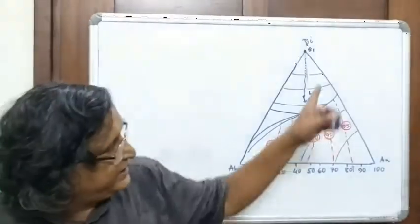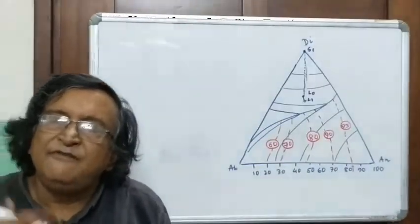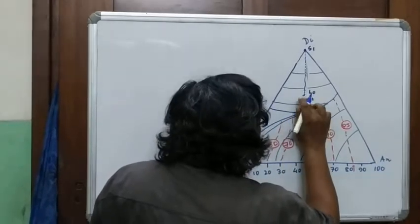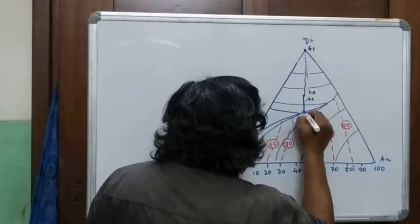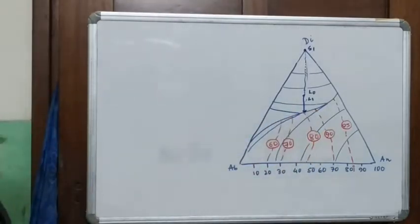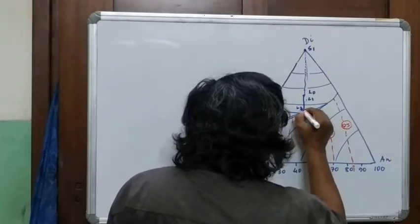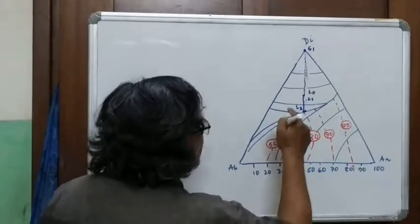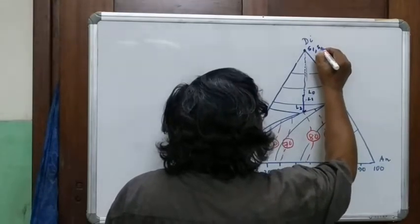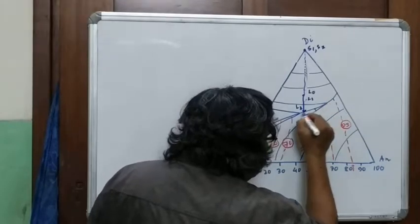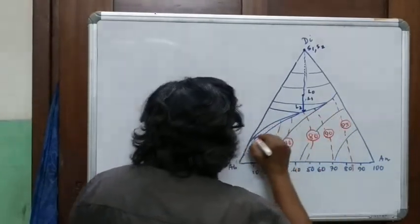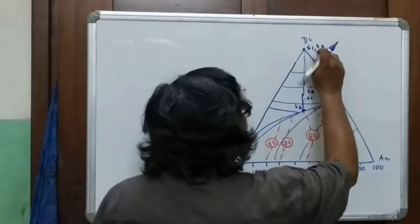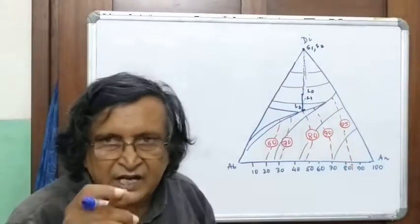L0 L1 divided by S1 L1 should be the fraction of crystallization; one minus that value will be the fraction of melt remaining. As we do this, at one point we will reach L2. What is the solid composition? It is still S2 if it has not reached the boundary curve. But if it has reached the boundary curve, then your solid S2 will not be only diopside — it will contain a little bit of plagioclase.